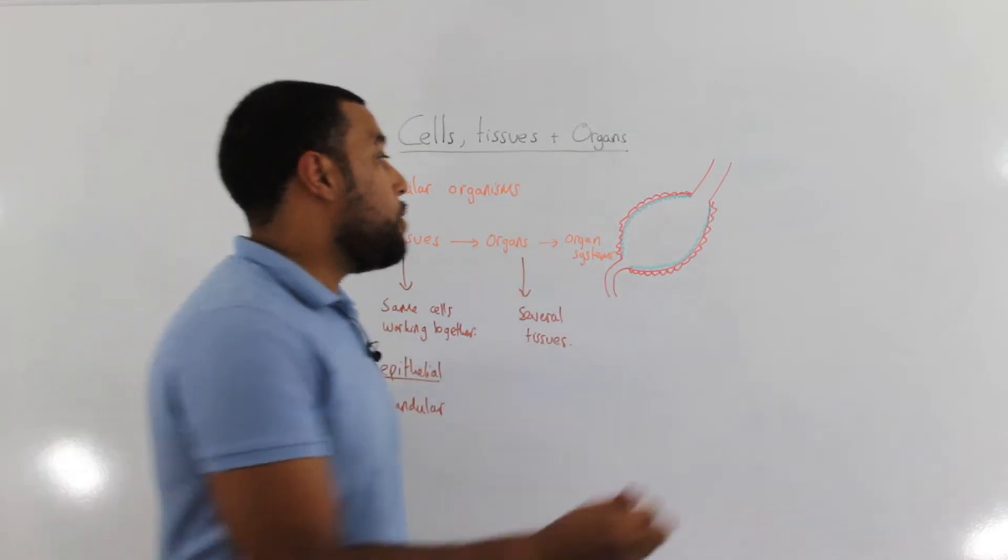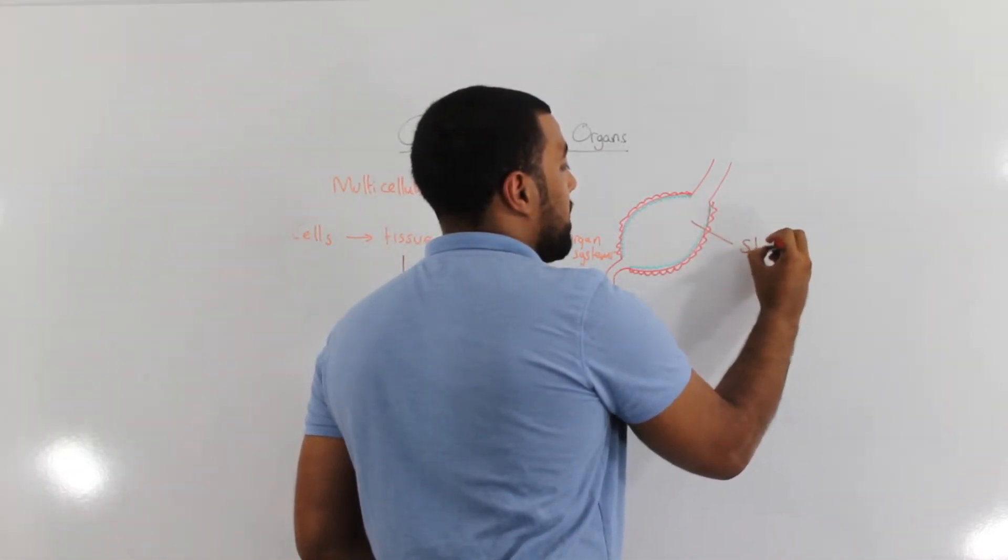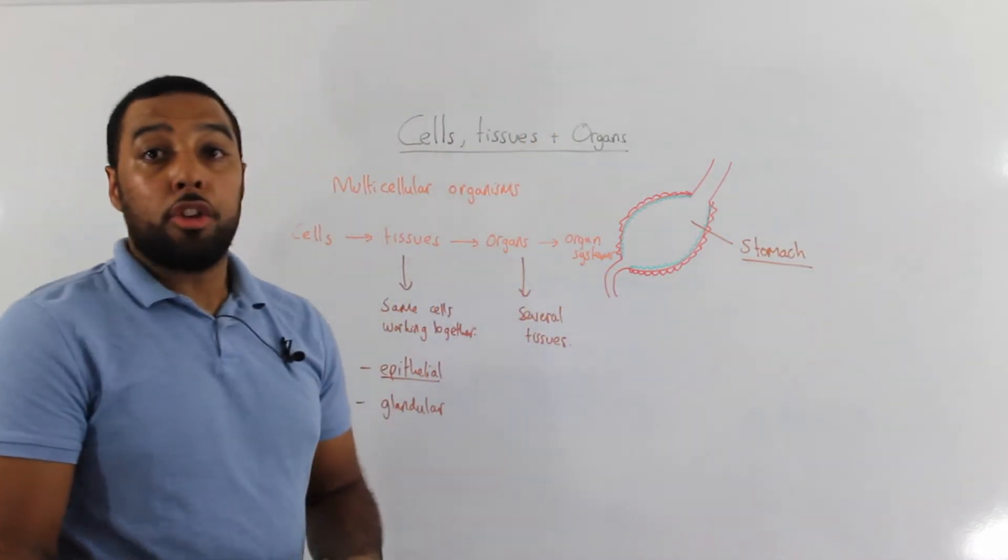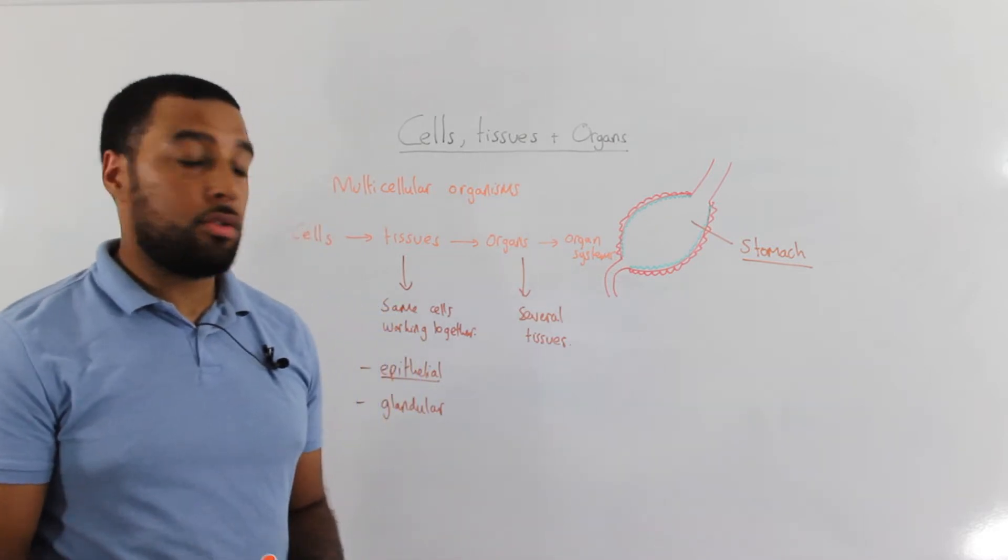For example, if you look at this organ here, hopefully you can recognise that this is the stomach. The stomach is made up of several different tissues.